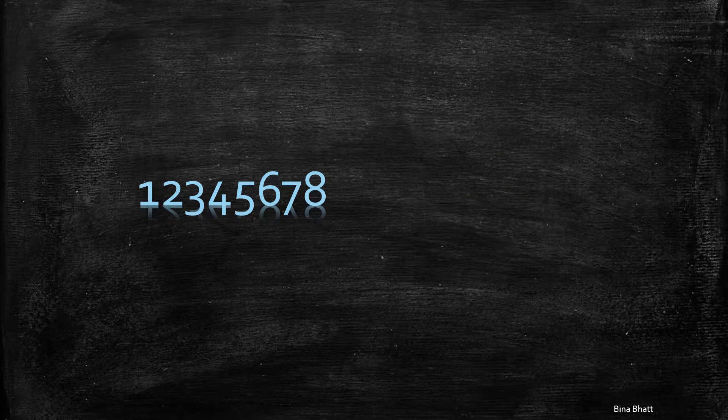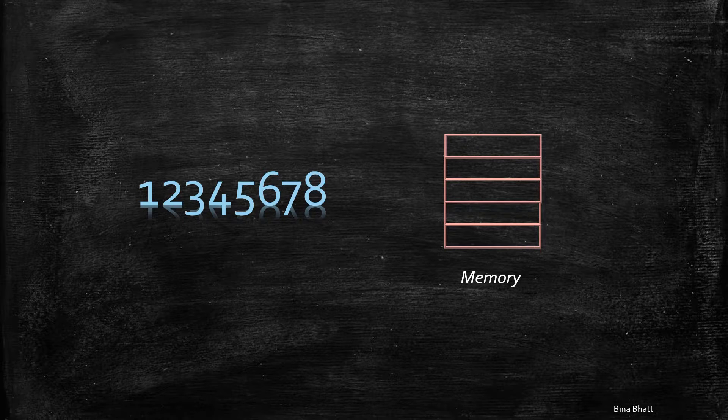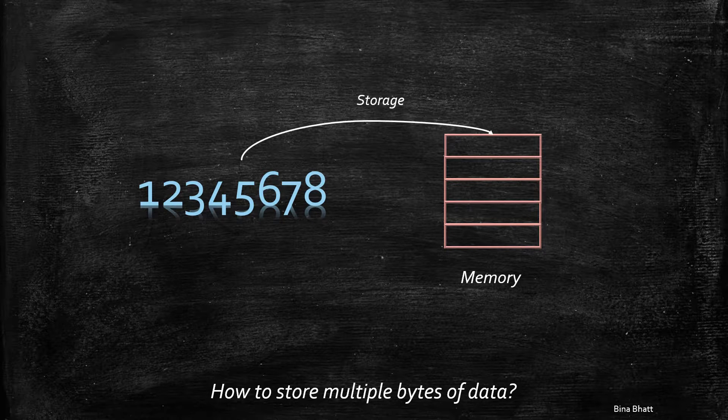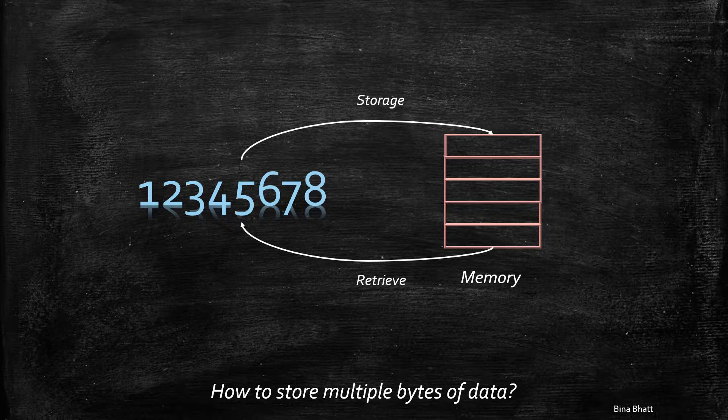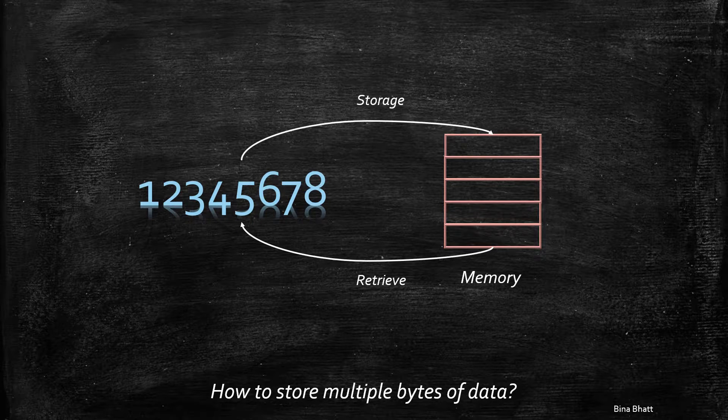However, consider this example of multibyte data. So how should we order the bytes in this case such that we are able to retrieve the number correctly every single time as required?